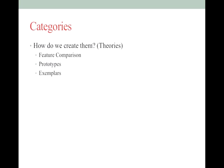So how do we create these categories and how do they work? There are three big theories — and then there are neural net models. Those three theories are feature comparison theory, which you've heard before in the recognition section, prototype theory, and exemplar theory.